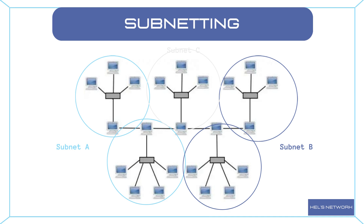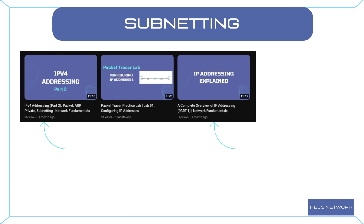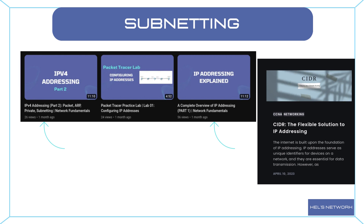To understand subnetting, we need to grasp two fundamental concepts: IP address classes and CIDR notation, as well as subnet masks and subnet sizes. We have already talked about these concepts in this video and our blog, but here's a brief recap. IP addresses were initially classified into five classes, but with the introduction of CIDR notation, we now use a more flexible representation. CIDR allows for efficient allocation of IP addresses and simplified routing.